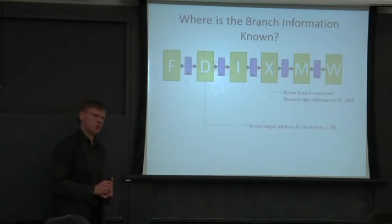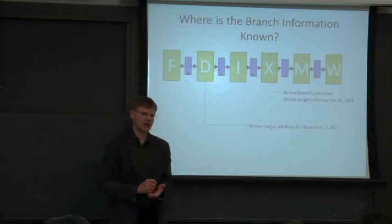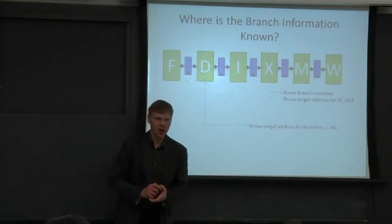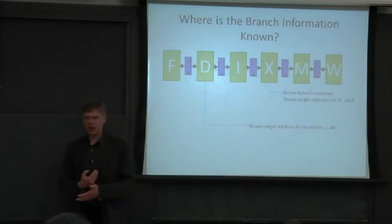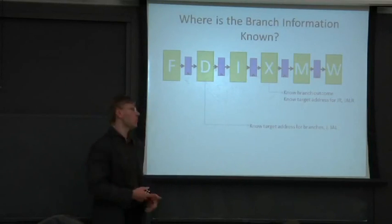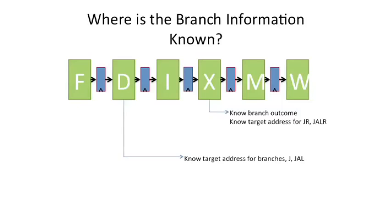OK, so this is a little bit more review from something we had talked about in lecture two. We talked about figuring out where we can resolve a branch. So here's a little bit longer pipe - one, two, three, four, five, six - six stages, not quite our five stage pipe. I put an issue stage in here. And let's look to see where everything gets known.